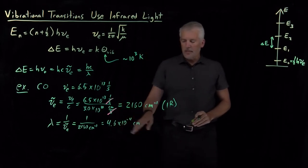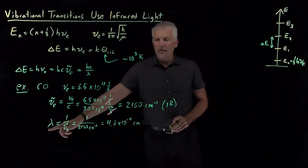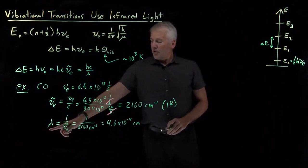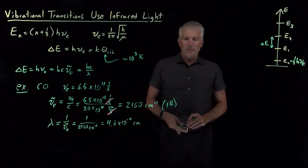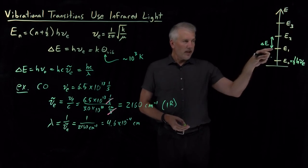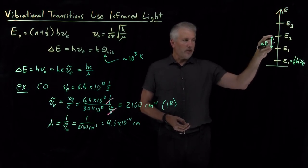So, 4.6 times 10 to the minus 4 centimeters is the wavelength of light. If I find some photons with wavelength 4.6 times 10 to the minus 4 centimeters, that's the right energy of light, the right wavelength of light to excite these transitions.